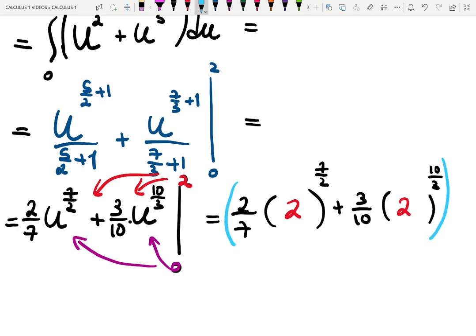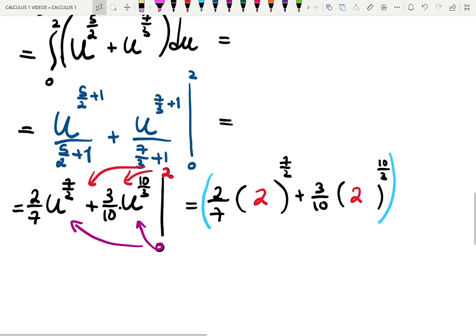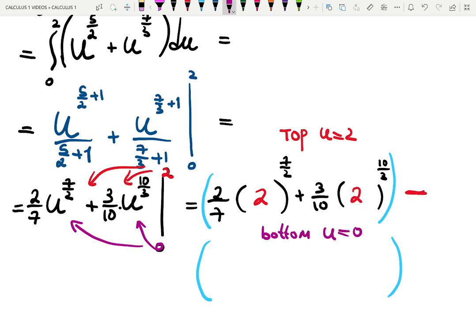Now, this is the important part. I highly recommend to put massive parentheses. These are not required, but the second ones are required. Negative sign. And then, open new parentheses and plug the 0 into the u. So, to make a good note for you, or maybe I should mention, I plugged the top here, which was u equals to 2. And now in different color, I will plug the bottom, the lower limit, lower limit of integration, which is 0.